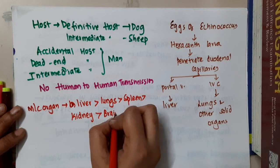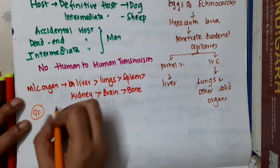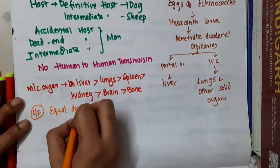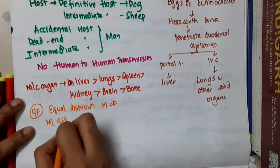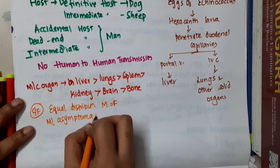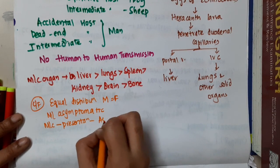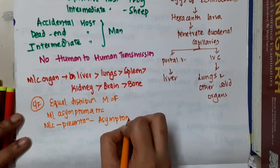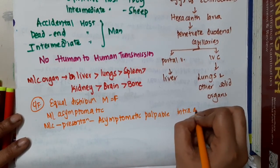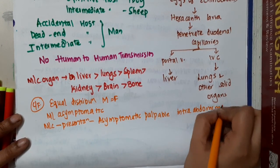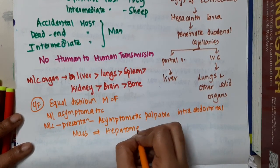Brain and bone are the last organs to be involved. Regarding clinical features, there is equal distribution in both males and females. Most patients are asymptomatic, and the most common presentation is an asymptomatic palpable intra-abdominal mass, which is hepatomegaly.